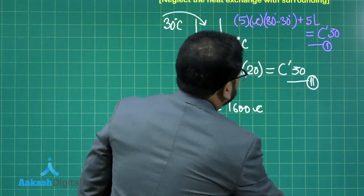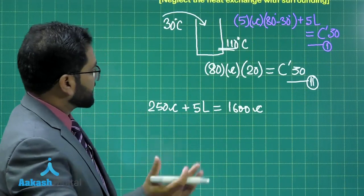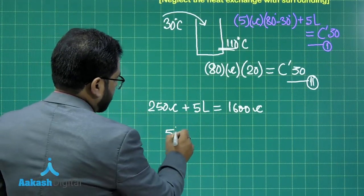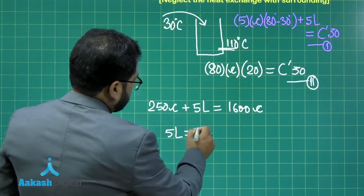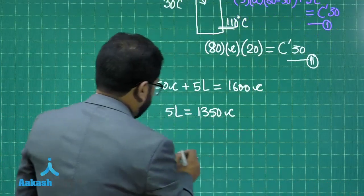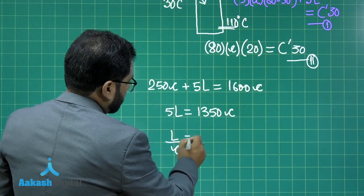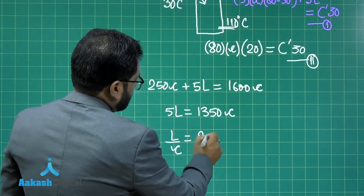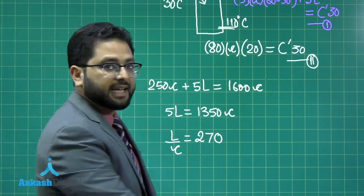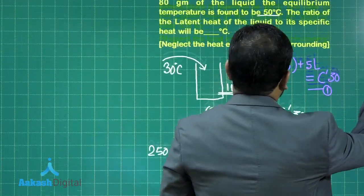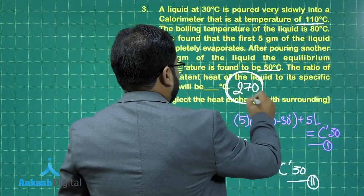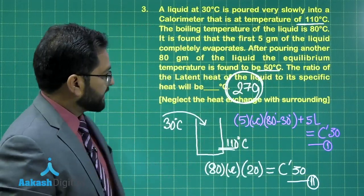All I required was the ratio of latent heat to specific heat capacity. And to calculate that, this is 5L and this is going to be 1350 C. And after that, you find L by C comes out to be 270. So the ratio of L is to C, which had been asked. And for this question, 270 is going to be the correct value.